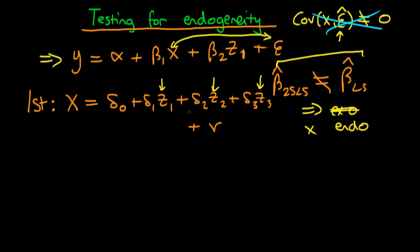And also from this regression, I have some sort of error, which I'm going to call v. And notice here that z2 and z3 are the two instruments which I'm using for x because z1 is already contained within our structural equation. So the idea within this first stage is what we then do is we use our estimated values of delta 0 through delta 3 to come up with estimated values of v, the error from this first stage. So why are we doing that?